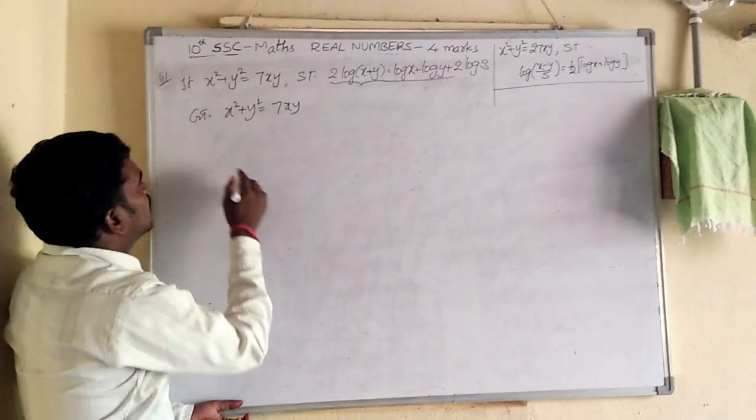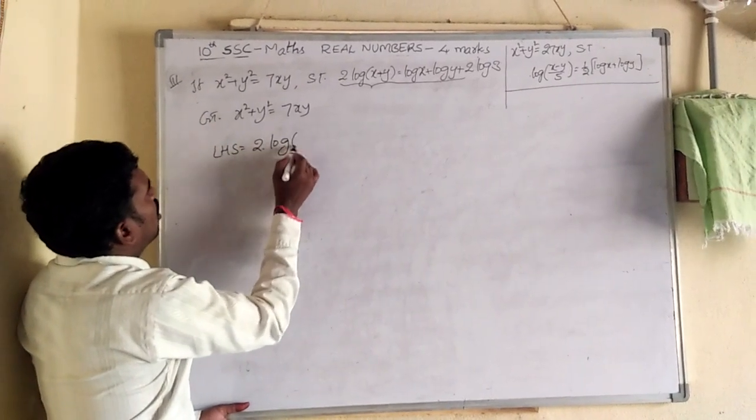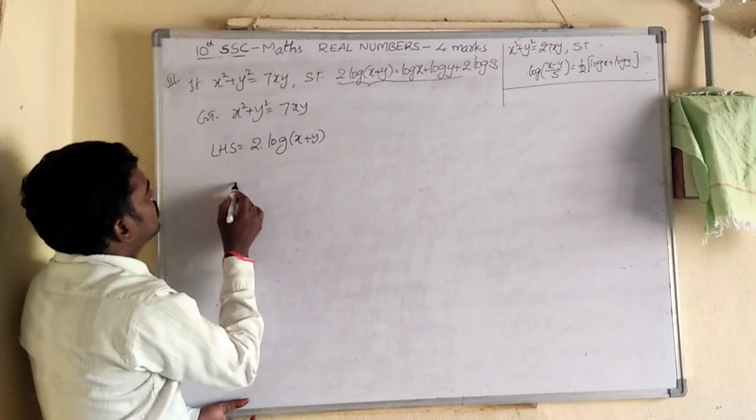In this take left hand side, take it left hand side, LHS, that is 2 into log of x plus y, the next step.